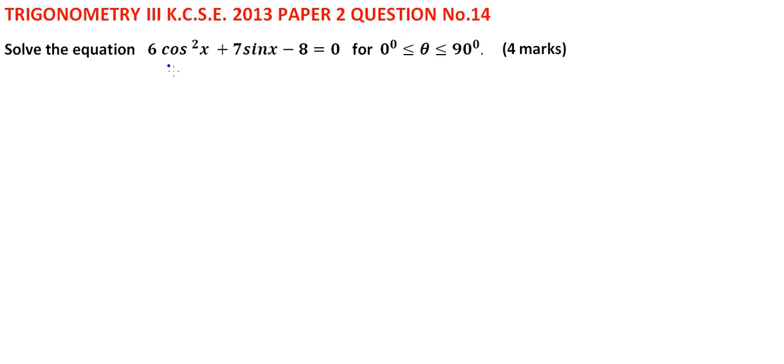Before we are able to solve it, we have to change cos squared x to express it in terms of sin x so that we have a common variable. We know that cos squared x equals 1 minus sin squared x.